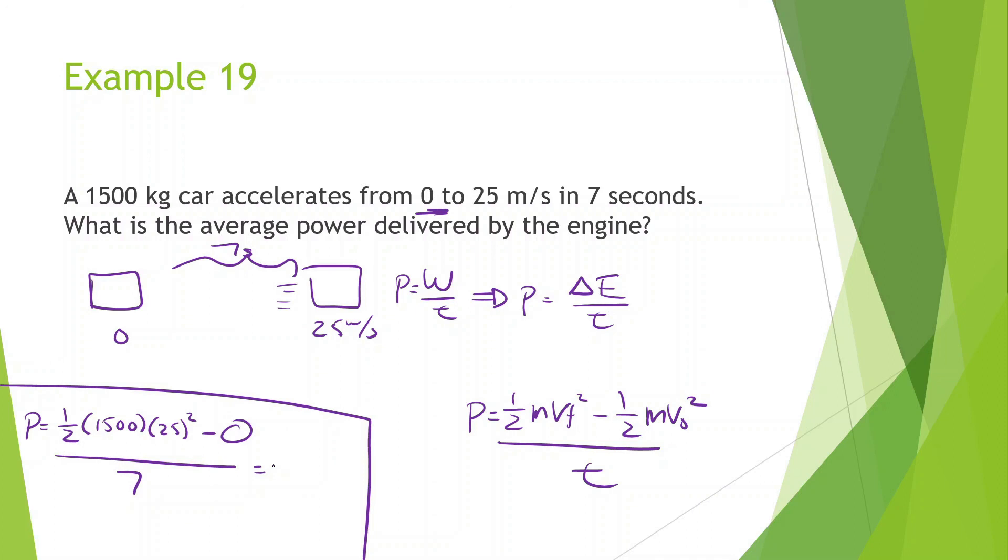So all this divided by the time, which is 7 seconds. And let's plug that into our calculator. 25 squared times 1,500 times 0.5 divided by 7, we get around 66,964 watts. That's how much power is provided by the car. And a lot of times you hear about horsepower with cars and everything like that. Alright, moving on.